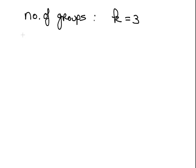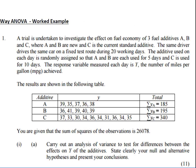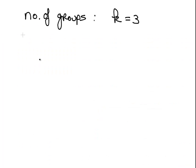So as I go I am collecting up this information. A, B and C, where A and B are new and C is the current additive. The same driver drives the same car on a fixed test route during 20 working days - that is important, that is our overall sample size. I am going to write N equals 20, the overall sample size.